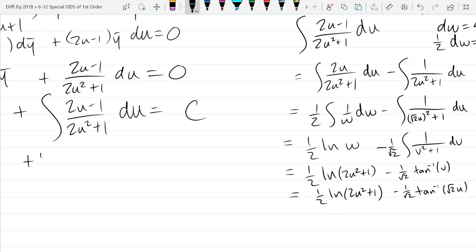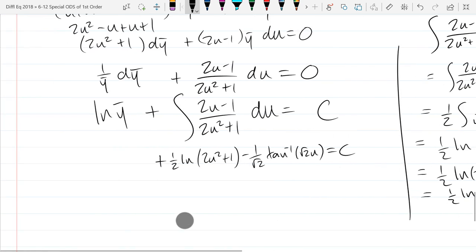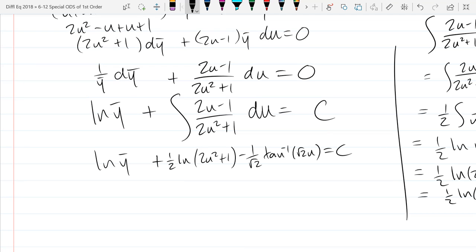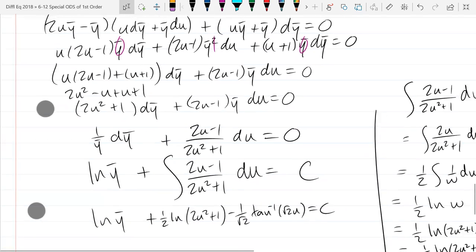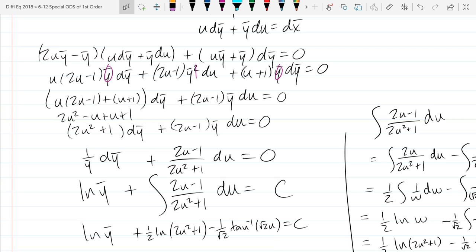So now we're going to take that back to our differential equation. We get ln y bar plus 1 half ln 2u squared plus 1 minus 1 over square root 2 tan inverse square root 2u equals c. However, what is preventing this from being the answer to the original?